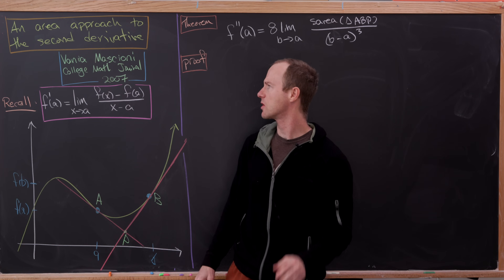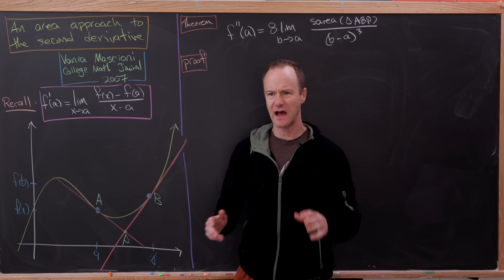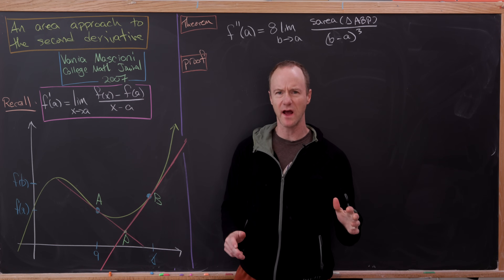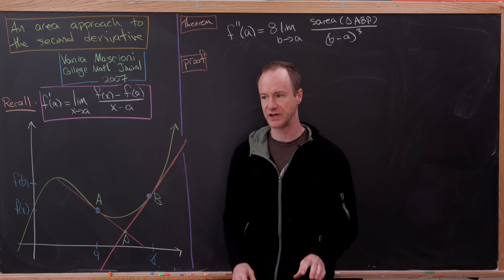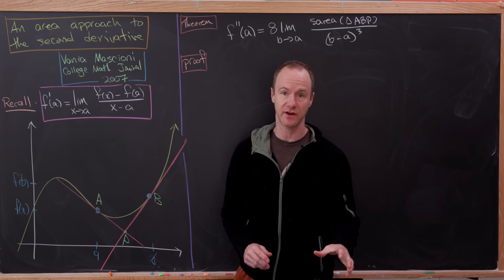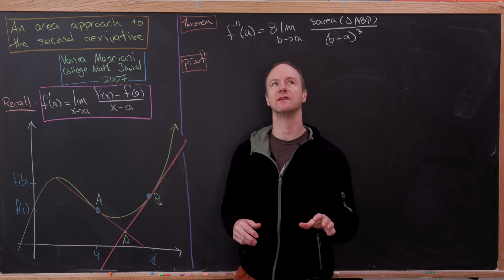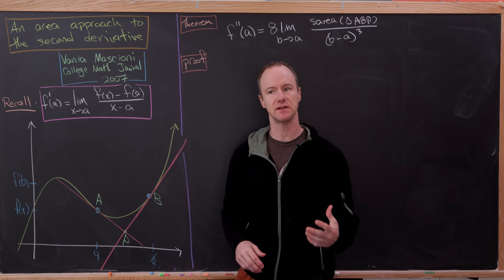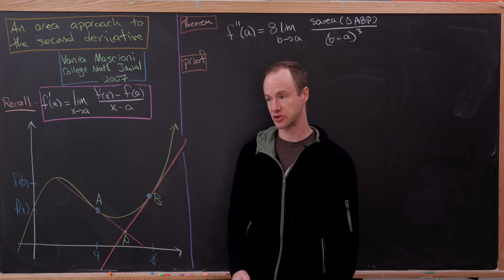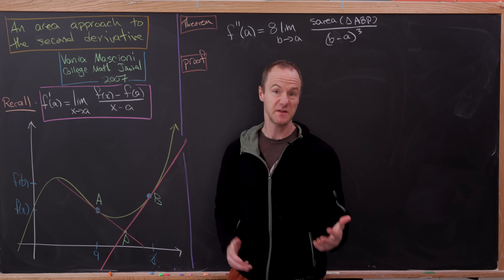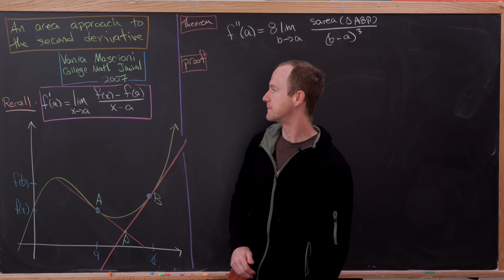I recently found a nice article in the College Math Journal that allows us to write the second derivative of a function in terms of the area of a triangle. Well, it's not exactly the area of a triangle — it's the limit of the signed area of a triangle. I think this is a really nice result, so I thought I'd make a video about it.